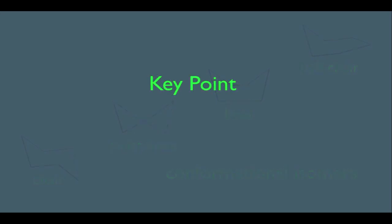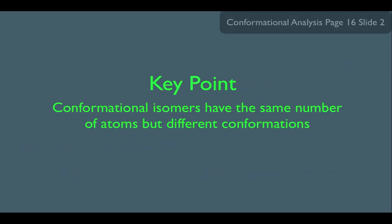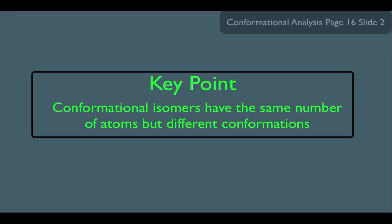So what have we learned? Very simple: conformational isomers have the same number of atoms but different conformations.